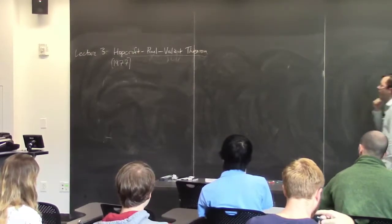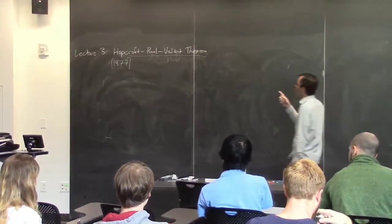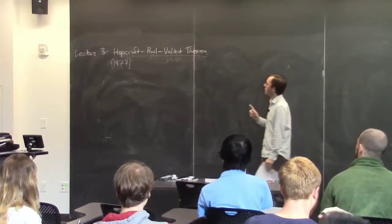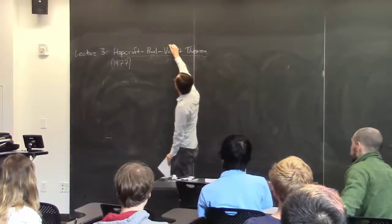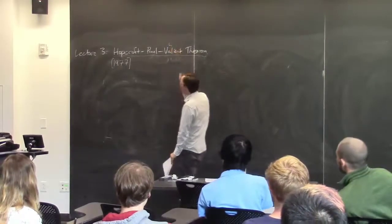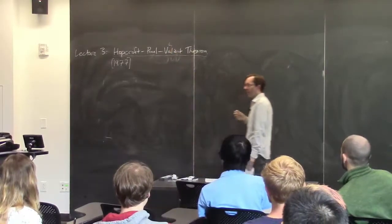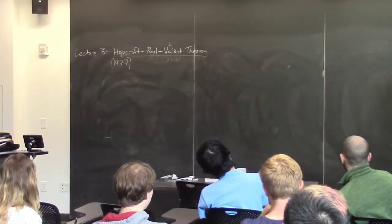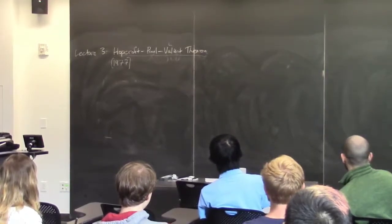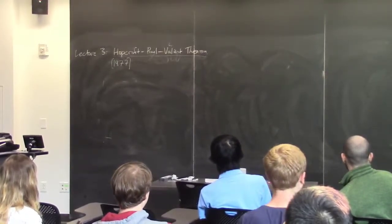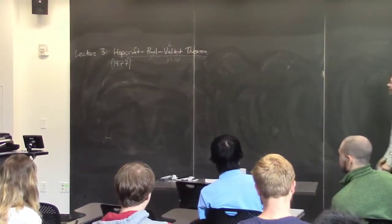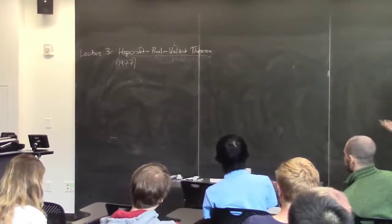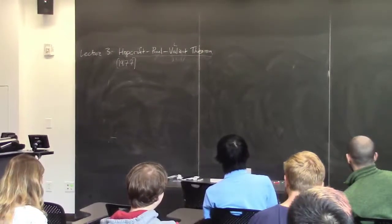This is the theorem proved by Hopcroft, Paul, and Valiant. It's a little bit confusing because this is the less famous Valiant, who's probably still the most famous Valiant that does theoretical computer science, but he has a son called Paul Valiant that does theoretical computer science, so it's a little bit confusing. And also a son called Greg Valiant.